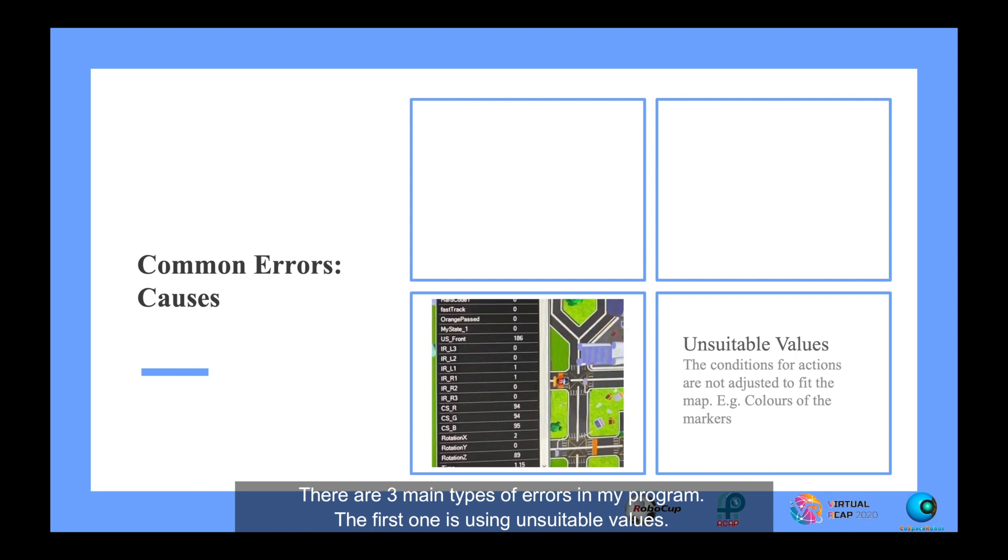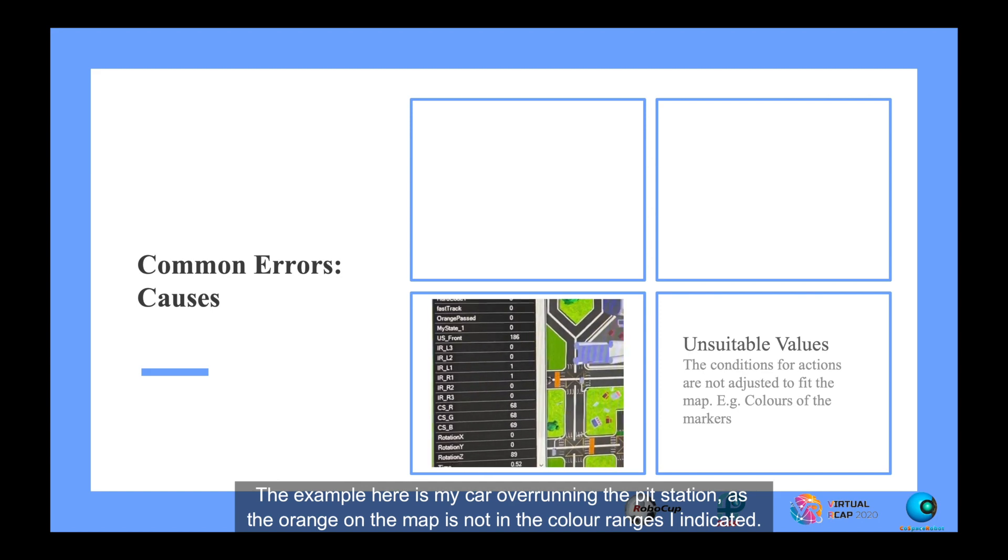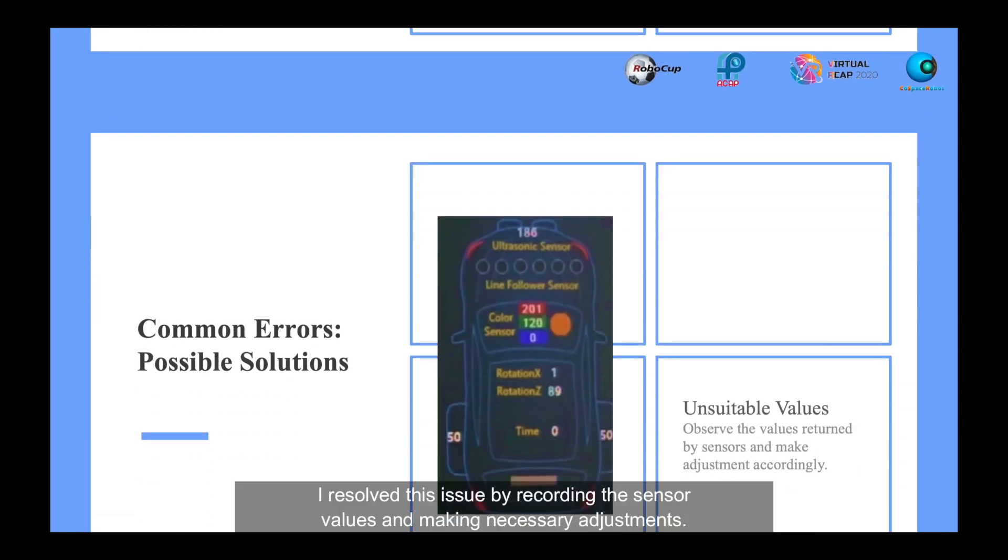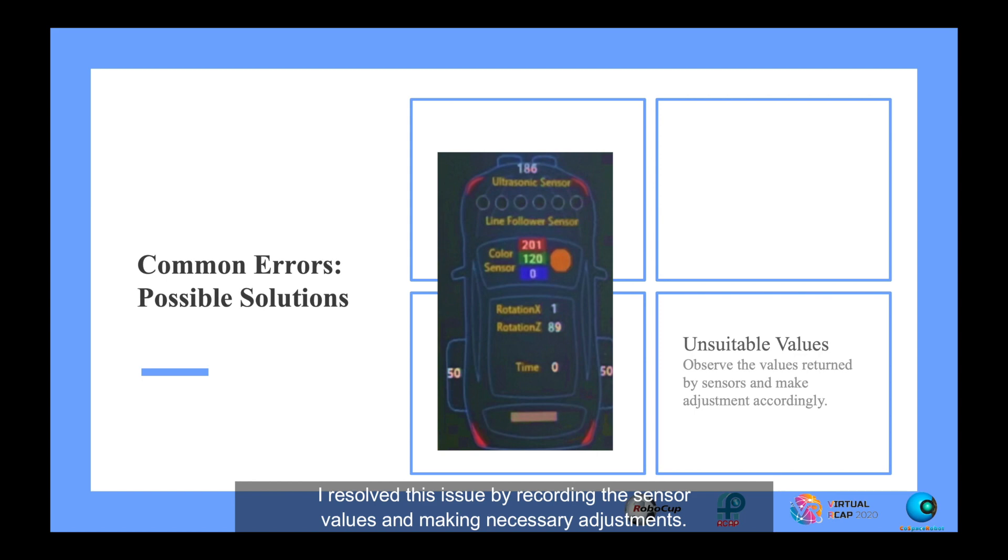There are three main types of errors in my program. The first one is using unsuitable values. The example here is my car overrunning the pit station, as the orange on the map is not in the colour ranges I indicated. I resolved this issue by recording the sensor values and making necessary adjustments.